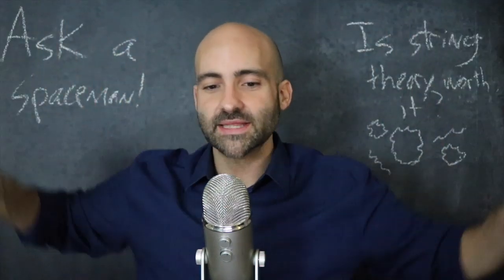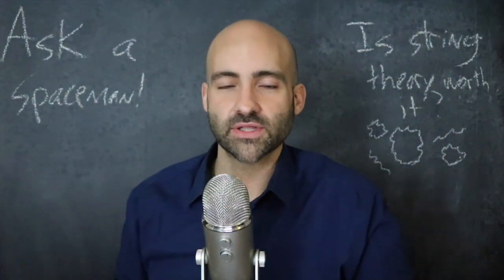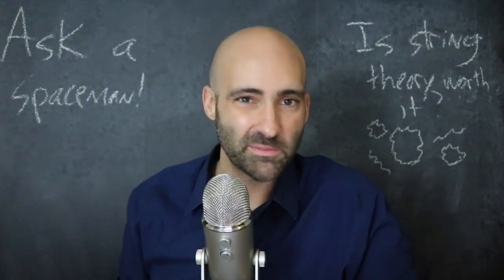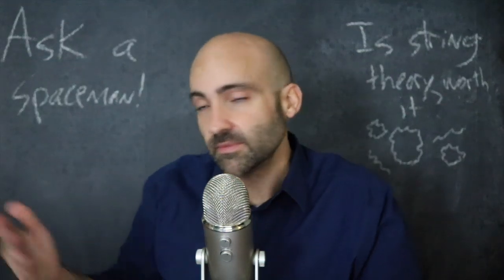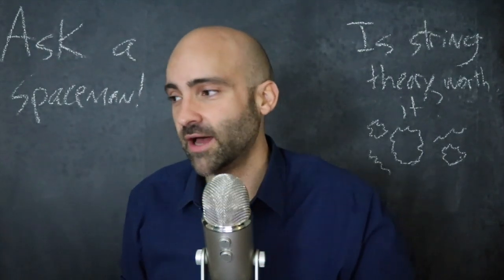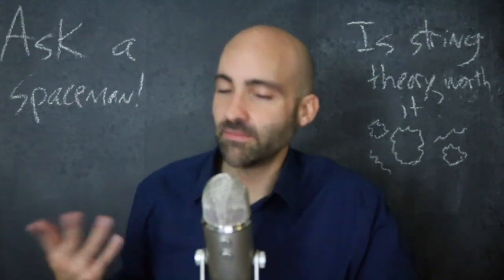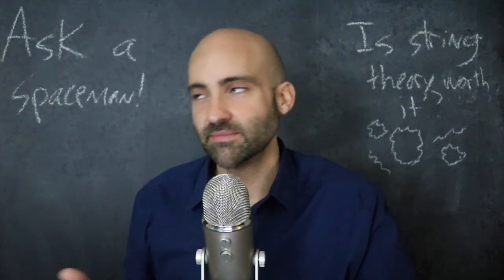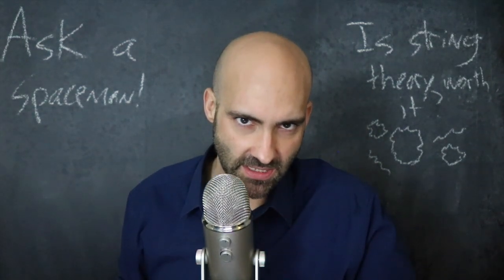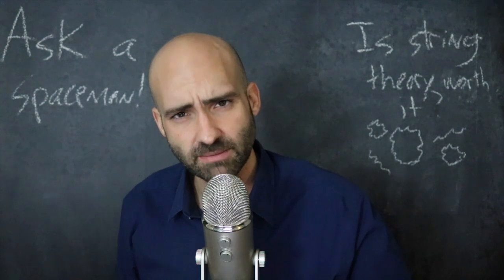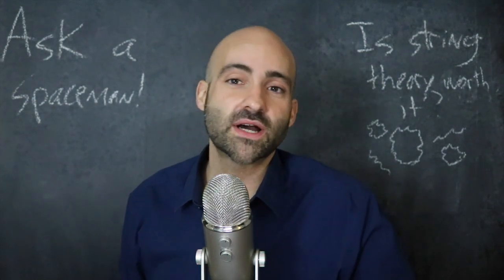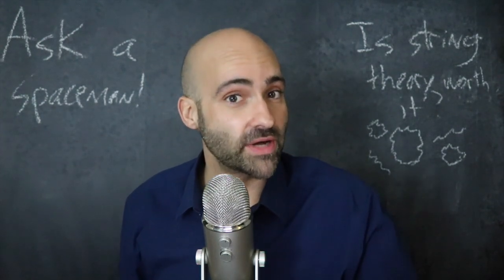What are the ways that these extra dimensions are curled up? They have a name: the possible ways that the dimensions are curled up are called Calabi-Yau manifolds, named after the mathematicians who figured it out. How many possible configurations are there? Somewhere around 10 to the 200,000 — which is a large number. Which one is ours? We have no idea.